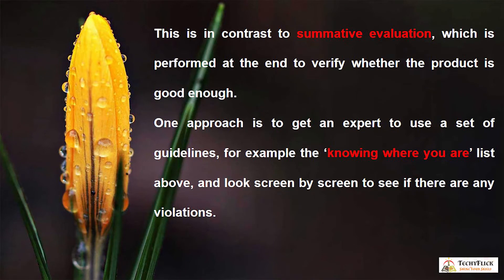Next, we will see about summative evaluation, which is performed at the end to verify whether the product is good enough. One approach is to get an expert to use a set of guidelines — for example, knowing where you are — and go screen by screen to see if there are any violations. We are going to see the guidelines, the storyboard, and the paper design, and analyze it screen by screen.